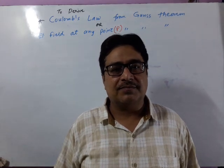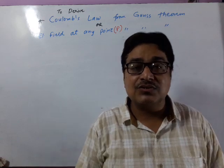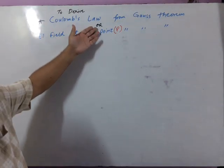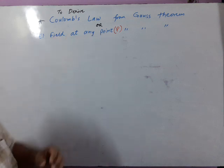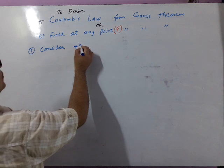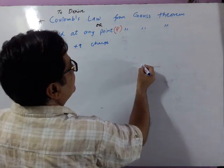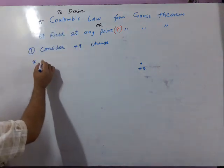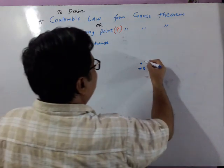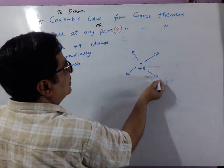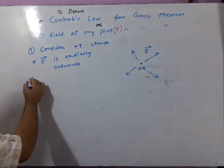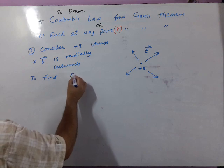To derive Coulomb's law from Gauss's theorem, or to find the electric field at any point using Gauss's theorem. From Gauss's theorem we will derive Coulomb's law, or we will find the electric field at any point P. Step number 1: consider a plus Q charge. We know the electric field is radially outward from this positive charge — the E vector acts in all directions. We want to find the electric field at any point P.